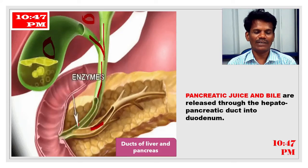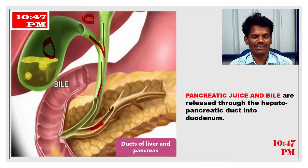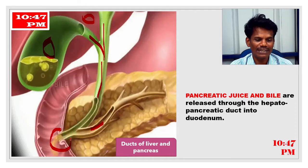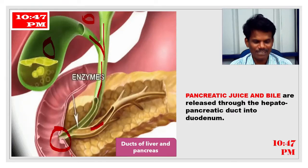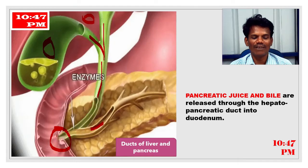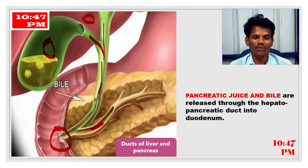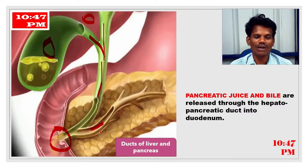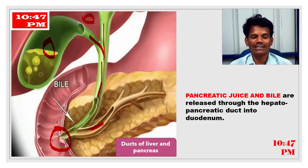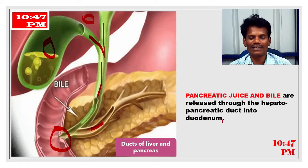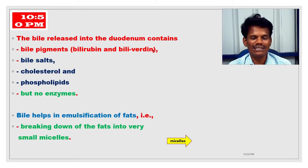Through these ducts, secretions are poured into the duodenum. At this junction there is a sphincter that opens and closes, called the sphincter of Oddi. Bile juice is visible in green color and pancreatic juice in yellow, both flowing through the duct and being poured into the duodenum via the hepato-pancreatic duct.